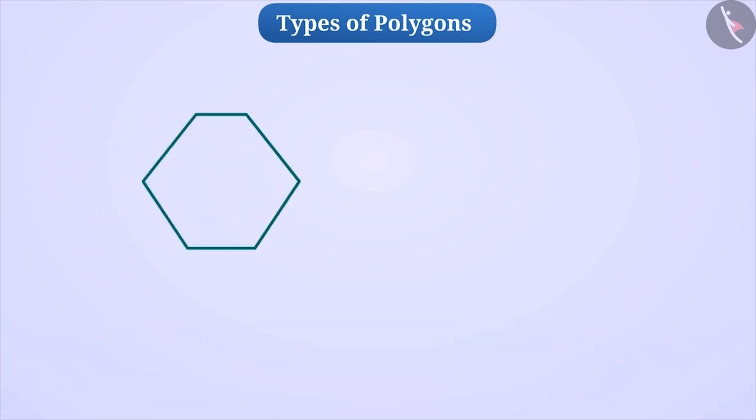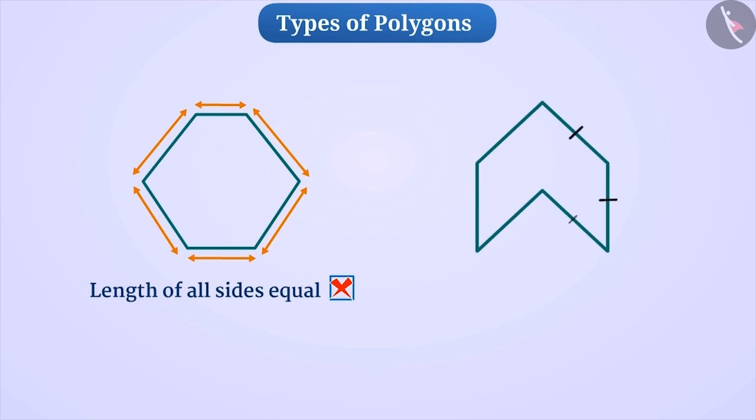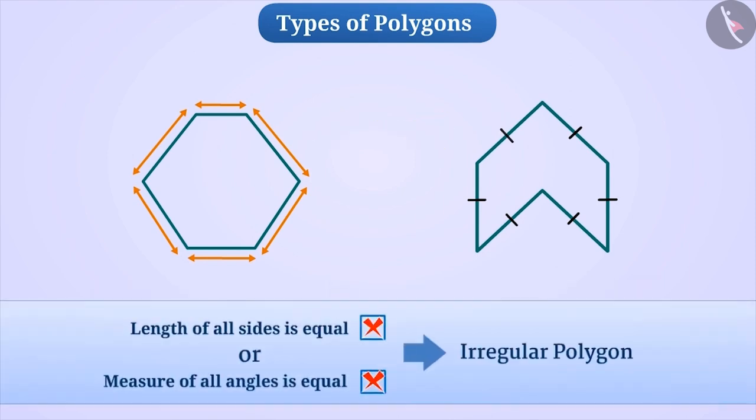Now, if we look at the sides of this polygon, we find that all its sides are not equal. Similarly, all the sides of this polygon are equal but all the angles are not equal. So, both of them are not regular polygons. Such polygons are called irregular polygons. Like, these two are irregular hexagons.